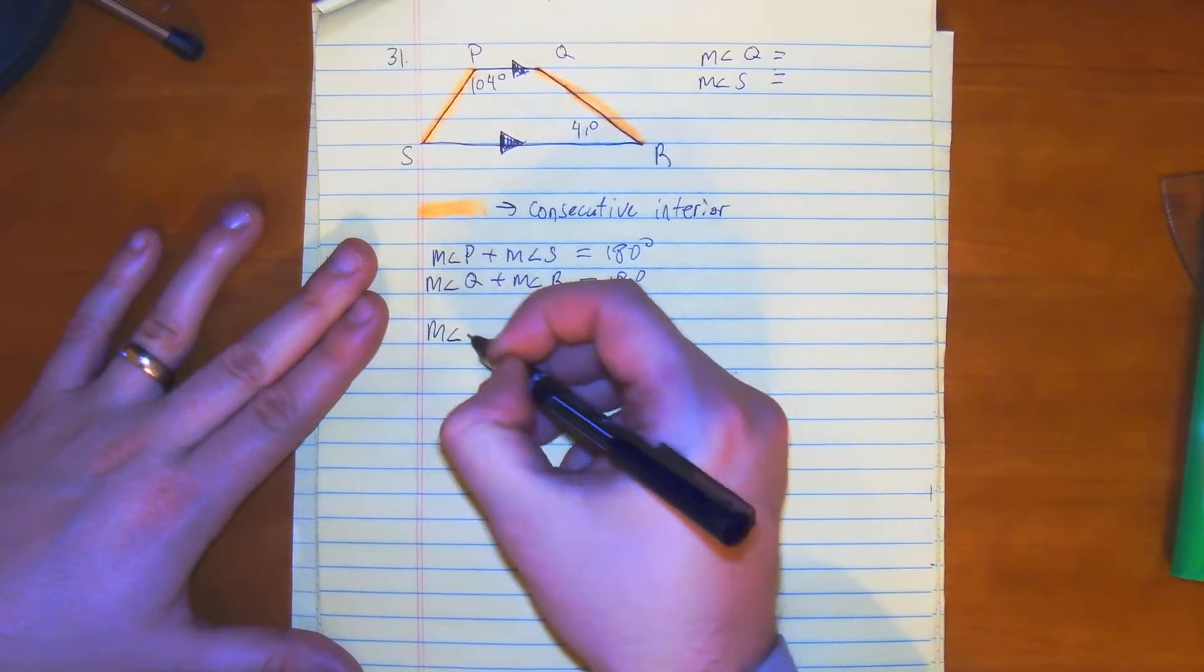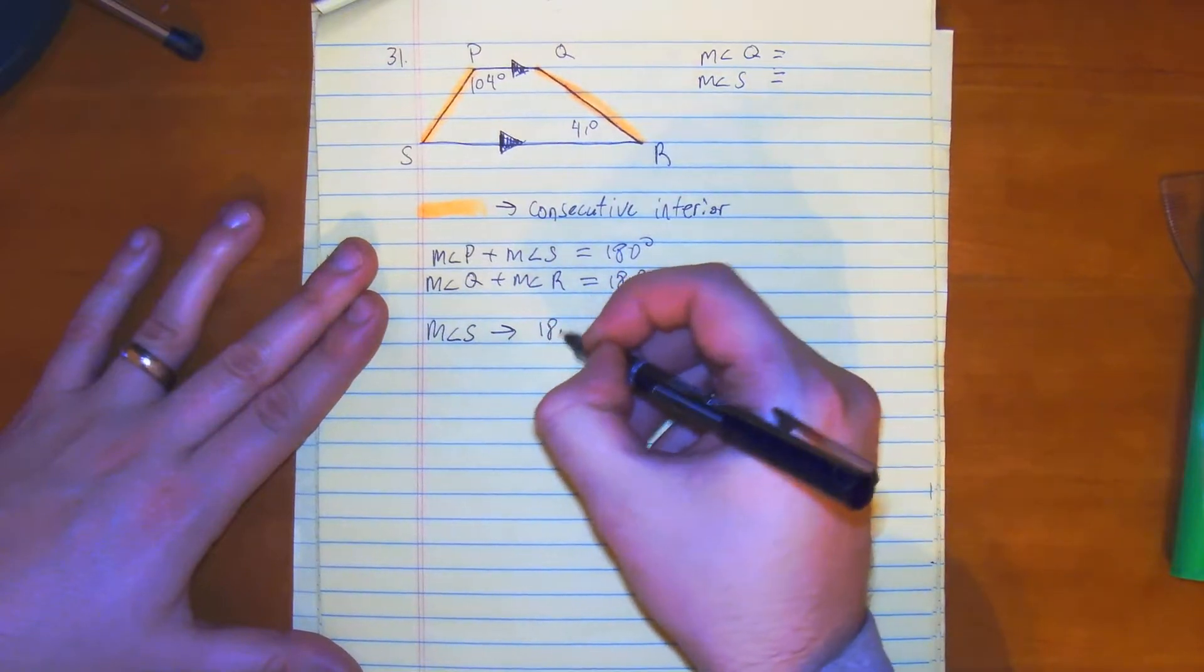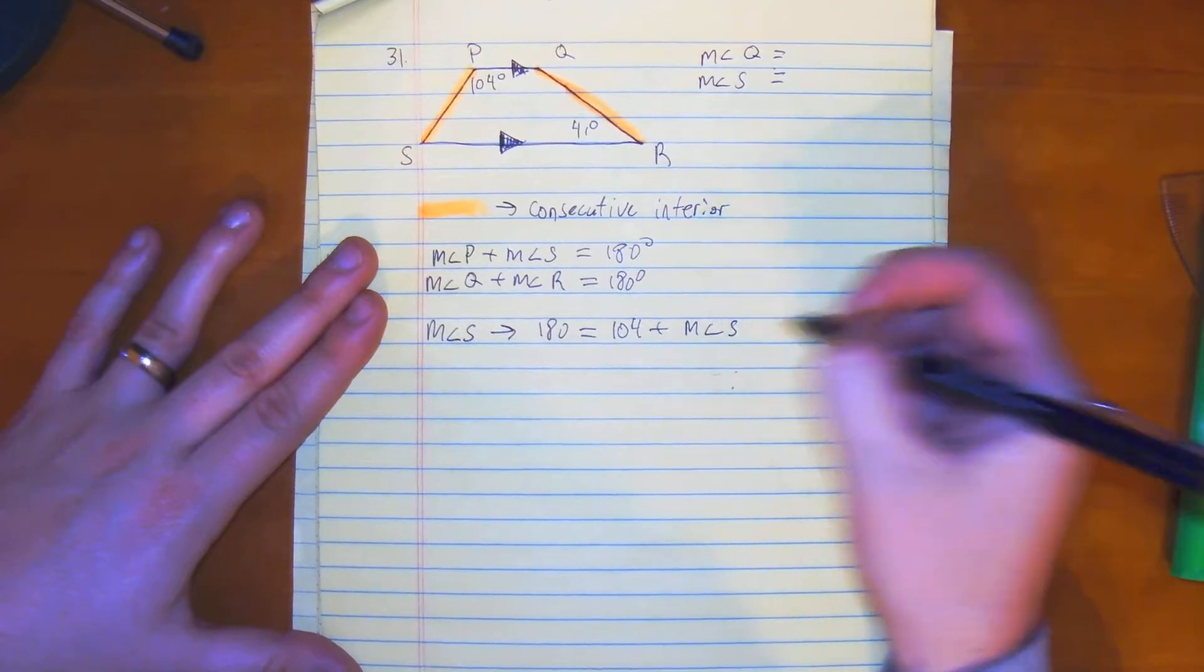So we have the measure of angle S. For this one, it would be 180 is equal to 104 plus the measure of angle S.